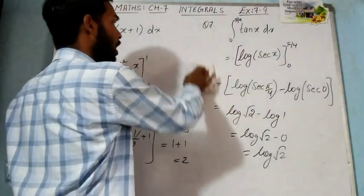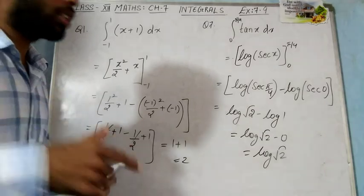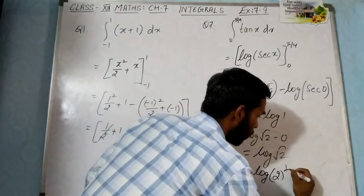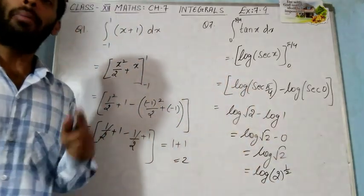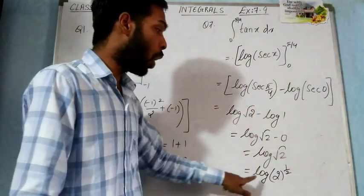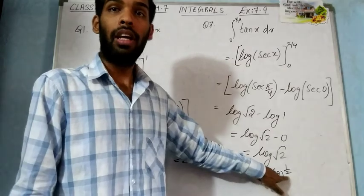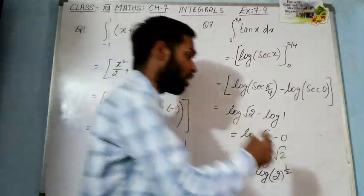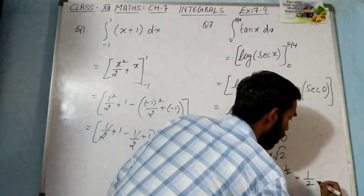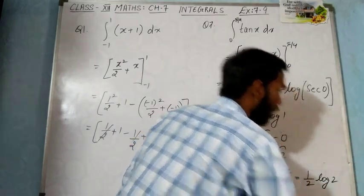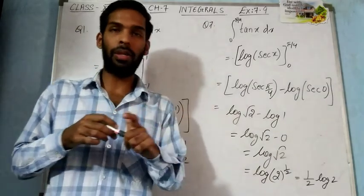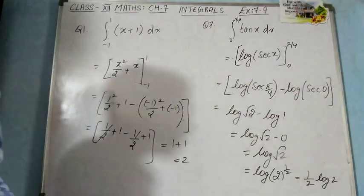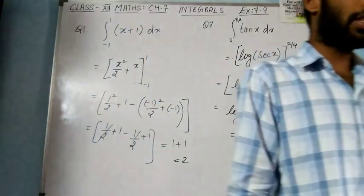If you need the answer in a simplified alternate form, you can write √2 as 2 raised to power 1/2. Using the log property: log x^m = m·log x, where the power becomes a pre-multiplier. So log 2^(1/2) = 1/2 · log 2. Both forms are correct and you will gain full marks.